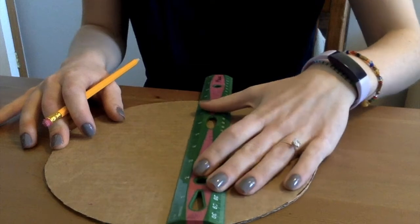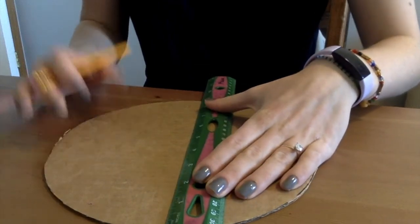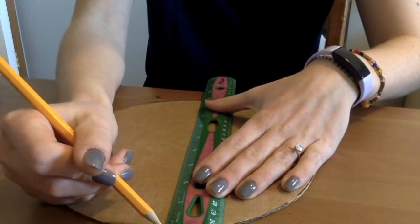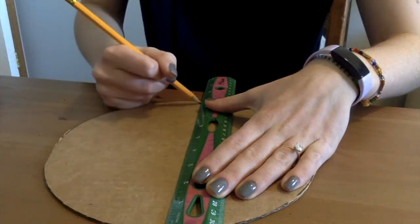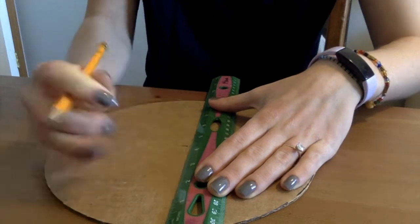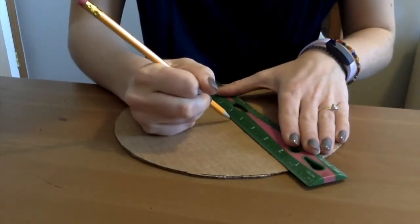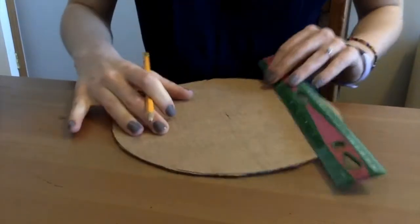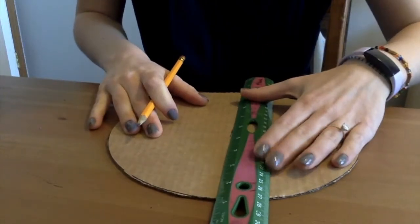Next we need to find the center point of our base. How we will do this is by measuring the whole diameter of the circle. We will divide this length in half to find the center of the diameter. For me my diameter or the length of my circle was 9 centimeters so I drew a small line at the 4.5 mark with my ruler.